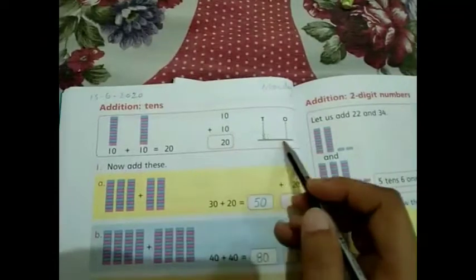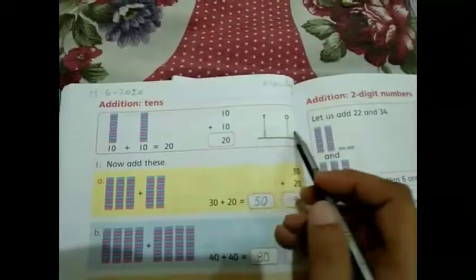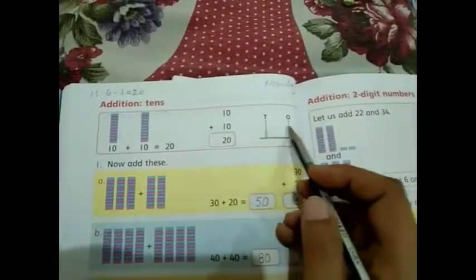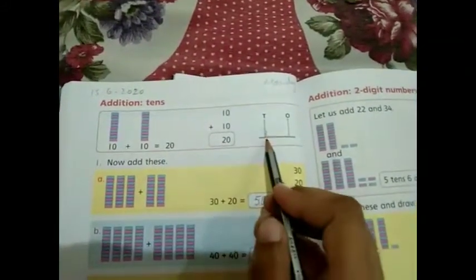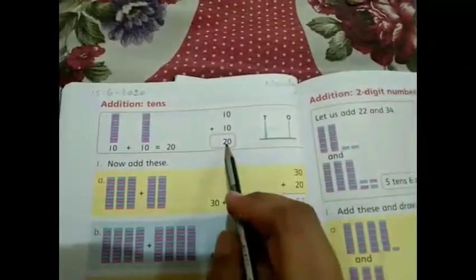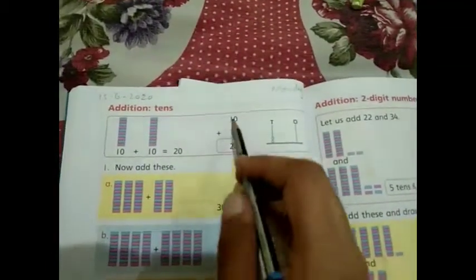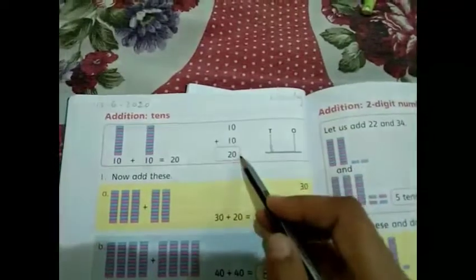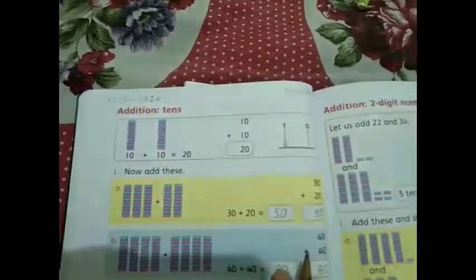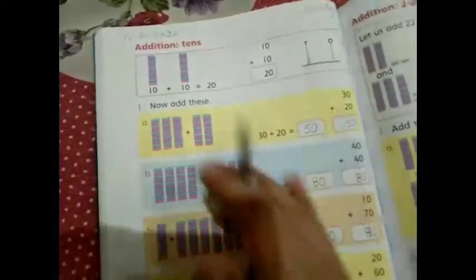So if we turn it into numbers, which number will I get? Yeah, it will be 20: 2 and 0. The number will be 20. So 10 plus 10 is also equal to 20. Now with the same procedure, we can add these numbers.